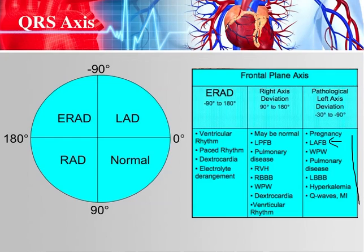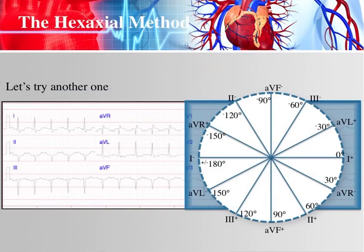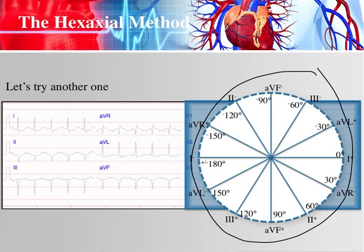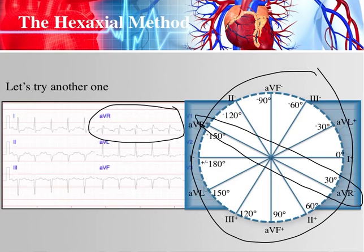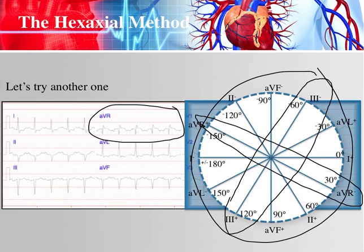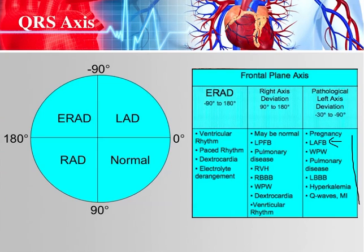In part three, we talked about this easy five-step method of using the hex axial diagram. You'd find your lead that's most equiphasic — in this case it was AVR. You'd find AVR on the diagram, find the lead perpendicular to AVR, which was lead three. Lead three is negative, so you find the negative side of lead three on the diagram. Our ECG axis is about negative 60 degrees, which is left axis deviation.